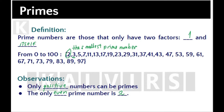Is number 1 a prime number? Do not forget that number 1 is not a prime number, because it has just one factor — 1 can only be divided by 1. Is it possible to know how many prime numbers there are? No, there is an infinite number of prime numbers.